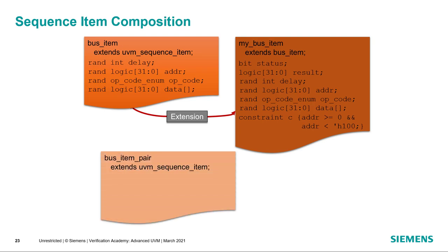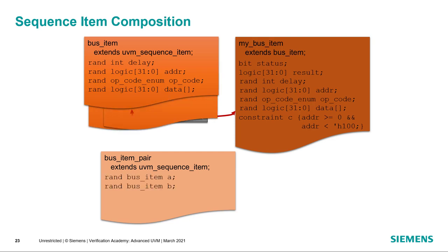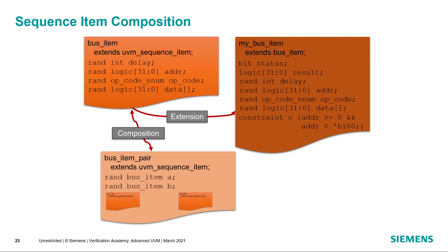It's also the case that we may need to create a new transaction that includes other transactions as part of it. We call this layering in UVM. We may want something like a bus item pair that has two bus items in it. We declare those as rand so that if we randomize the bus item pair, we'll wind up randomizing each of the bus items. Through the factory, we can override the types of those so they may be of type my_bus_item, the extended type, instead of the base type. Using both inheritance and composition, we can create arbitrarily complex transactions that include as much information as we need to communicate across components in our test bench.